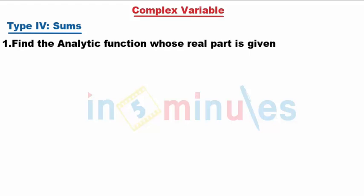Hello students, welcome to In 5 Minutes. We'll go with type 4 sums where we need to find the analytic function whose real part is given. So it is given as u = x³ - 3xy² + 3x² - 3y² + 1.